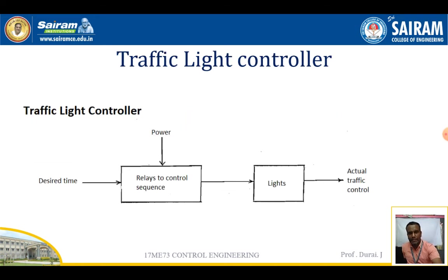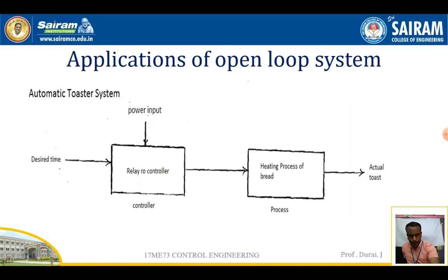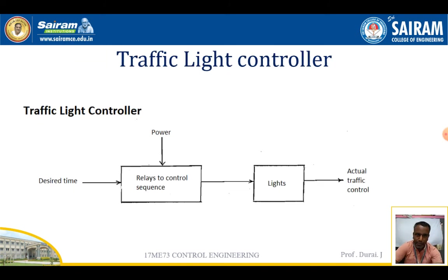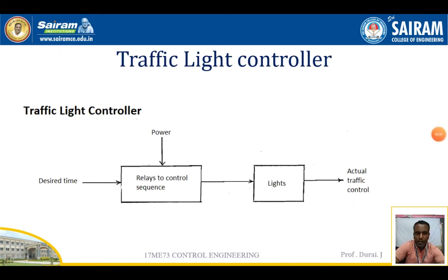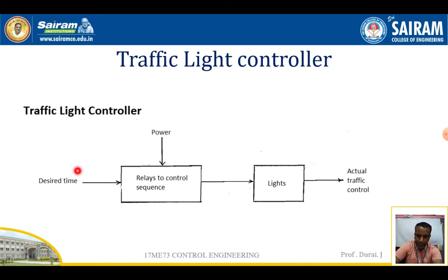The disadvantage is that the actual toast quality cannot be identified automatically. The human has to taste the bread to know how much it has been toasted — whether more or less. It will not automatically stop; we have to stop it manually. In the traffic light controller, the rush on a particular side is not accounted for — it gives equal time to all sides based only on the preset desired time.